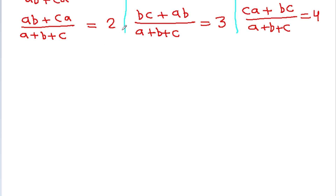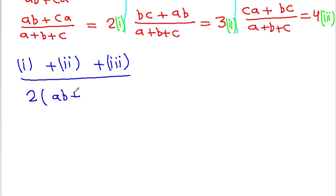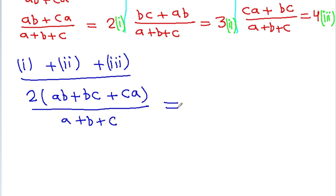Let's call these equation 1, equation 2, and equation 3. If we add equation 1 plus equation 2 plus equation 3, then ab, bc, and ca each appear twice. So we get 2 times ab plus bc plus ca, all divided by a plus b plus c, equal to 2 plus 3 plus 4, which is 9. Let's call this equation 4.